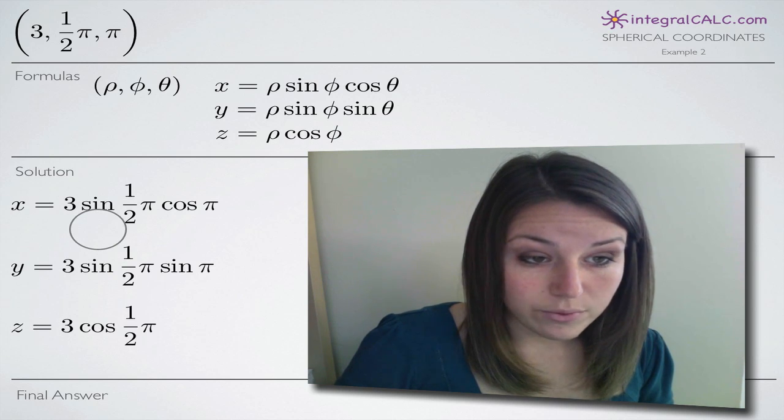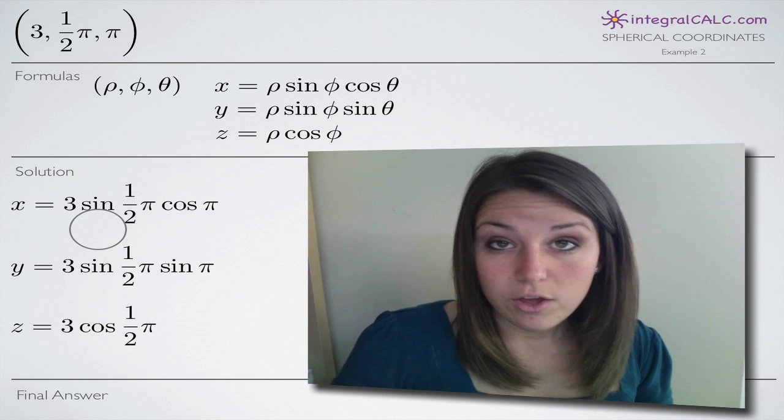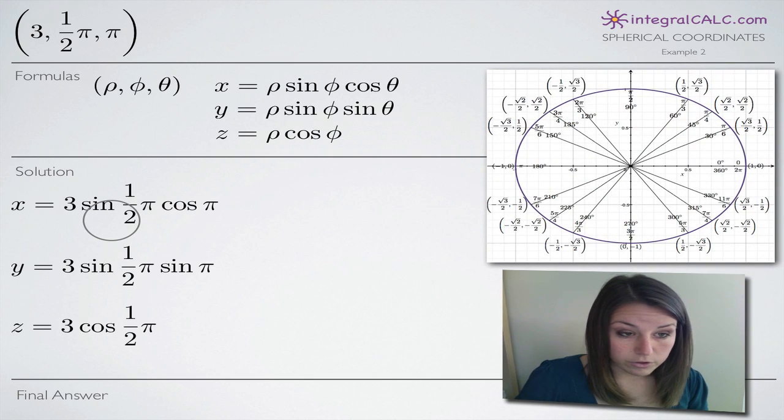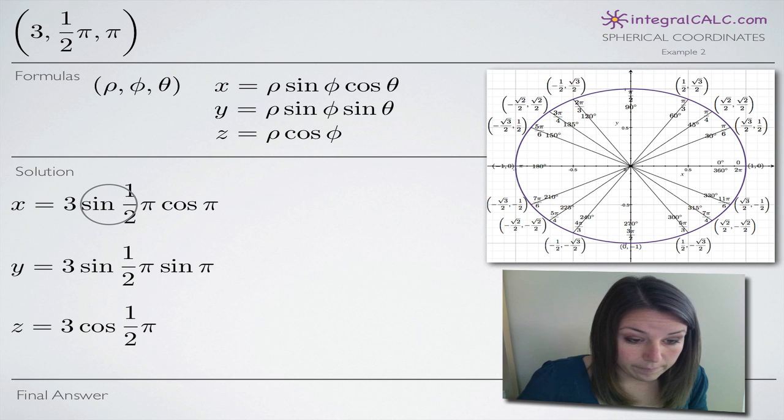Now in order to evaluate these equations, to simplify them, we're going to need to look at the unit circle here. So let's go ahead and take a look first at our x and y equations. You can see that we have sine of one half pi in both of them, right? Sine of one half pi.